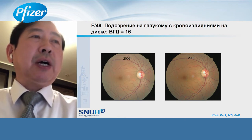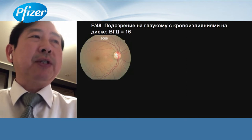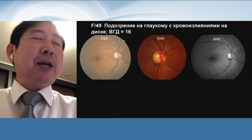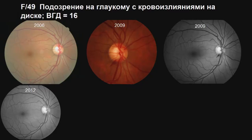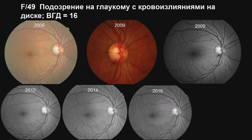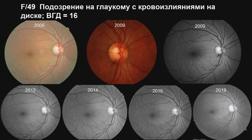We followed her with photographs: 2006, 2009, and 2012. There was another disc hemorrhage in 2012, and another recurrent hemorrhage in 2016. In 2009 only disc hemorrhage was detected, but you can see some nerve fiber layer defect in the inferotemporal region in 2012 — and it is getting darker, with the width of the defect increasing. So it is progressing.